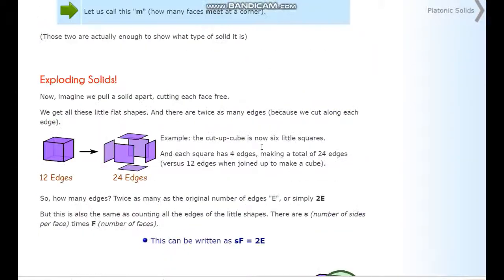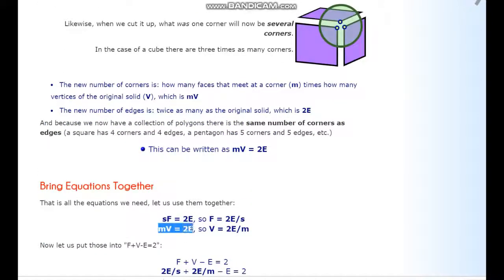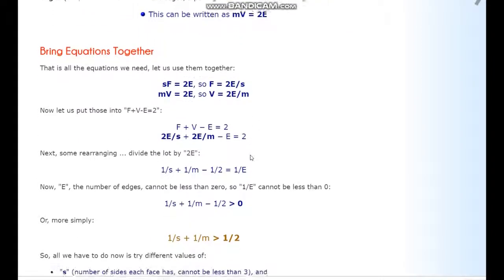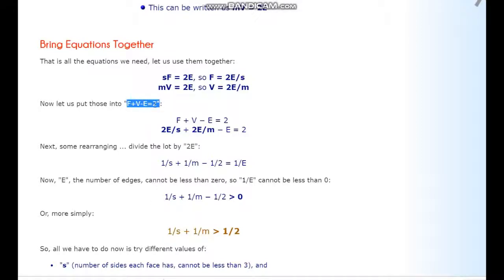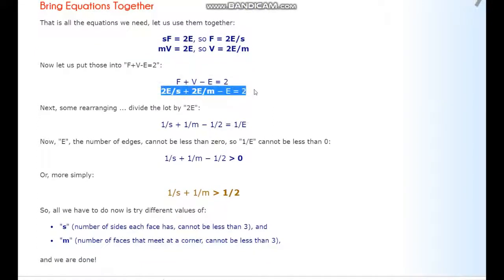Let's bring these two equations together. S times F equals two E, and M times V equals two E. We can manipulate these equations — dividing by S and by M respectively — and then substitute the resulting expressions for F and V into Euler's formula F plus V minus E equals two. Dividing everything by two E, we get a key equation.